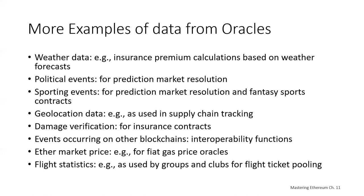Additional examples include fantasy sports contracts predicting how many yards or points a sports star will score, geolocation data used in supply chain tracking, damage verification for insurance contracts, events occurring on other blockchains for interoperability functions, the market price of Ether — since there's no direct way to get the market price of Ether while interacting on the Ethereum blockchain — and flight statistics for flight ticket pooling. This is just some of the many examples of how data could be used in smart contracts if that external data were available on the blockchain.